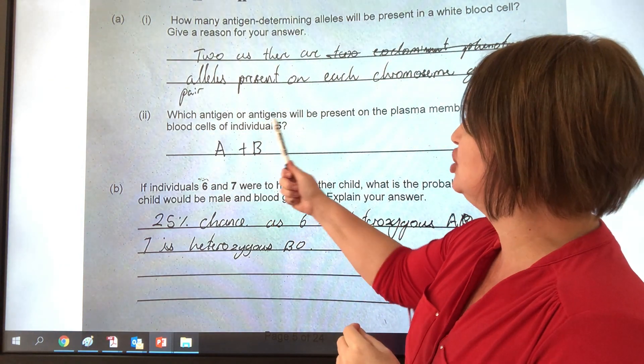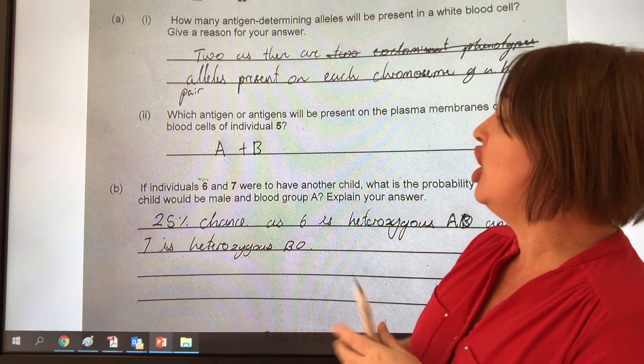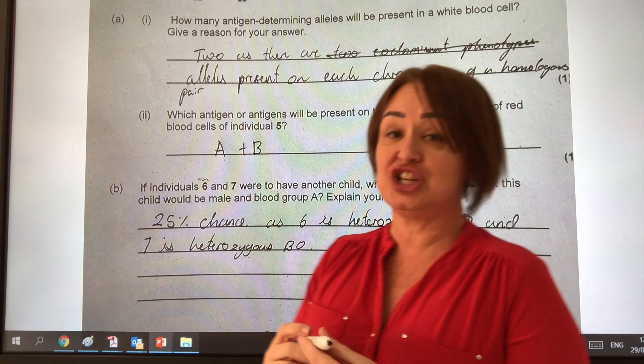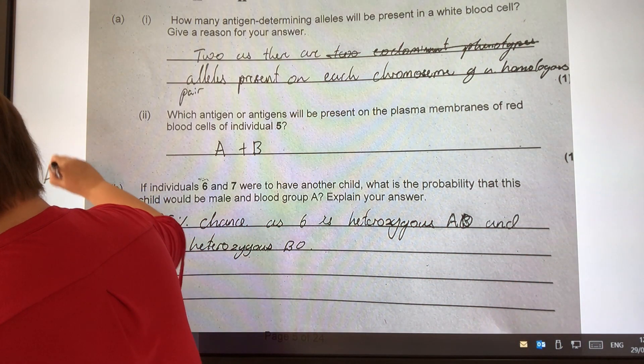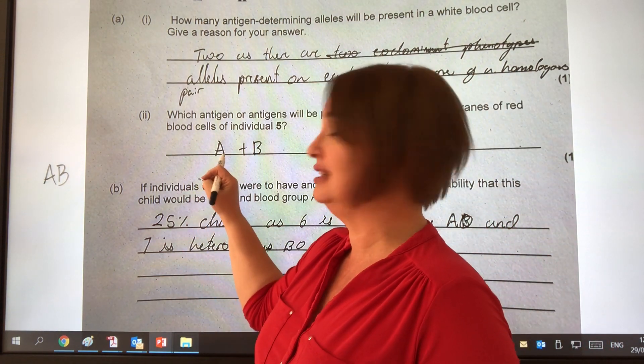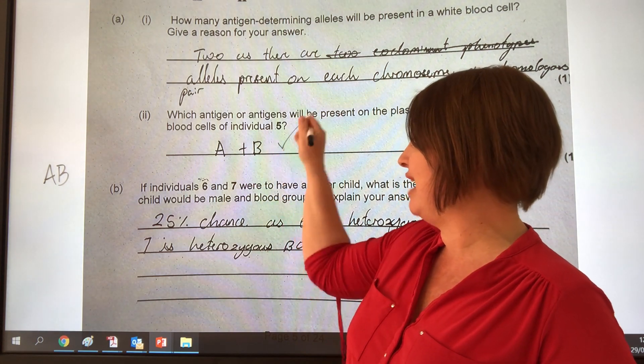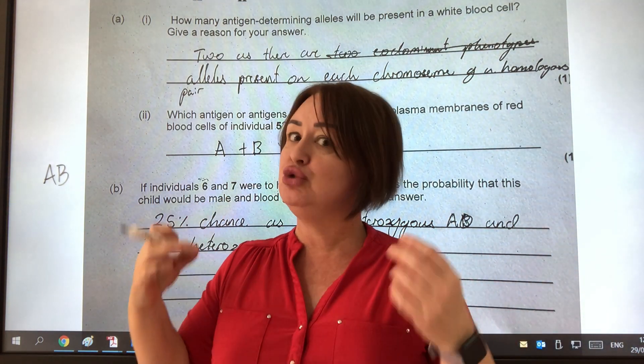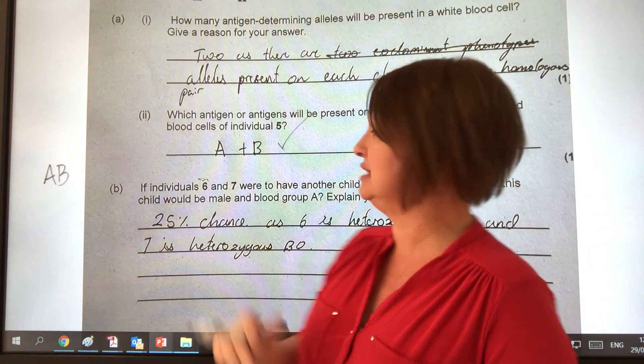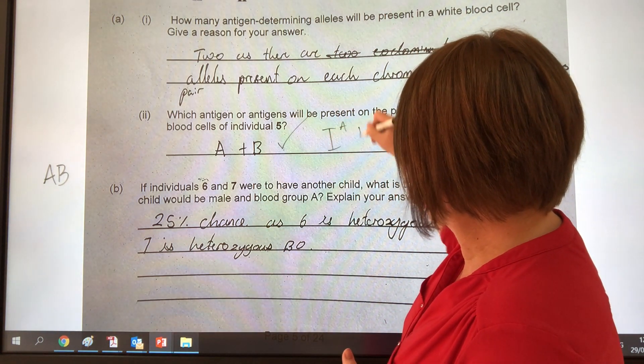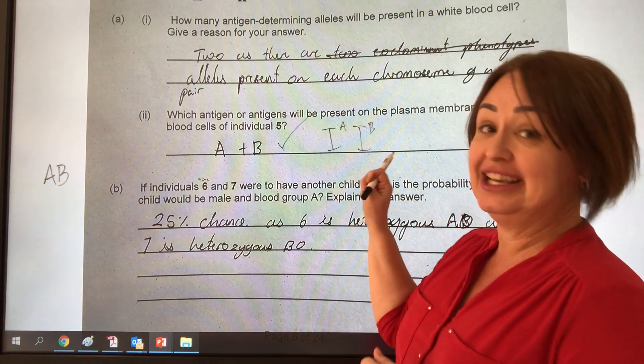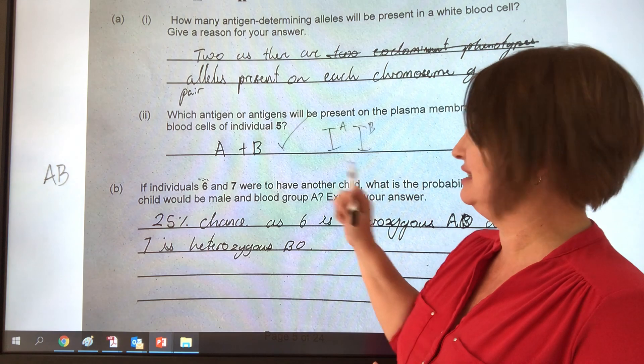Let's look at the next question. Which antigen or antigens will be present on the plasma membranes of red blood cells of individual five? Well, individual five actually has blood group AB. It tells us that in the question. And so basically, the antigens will be A, and the other antigen will be B. That is correct. Now according to the examiner's report, which you really should be reading alongside the mark scheme, it actually said that a lot of students lost that mark because they had written IA IB. Well that is obviously the alleles, and the question asks which are the antigens? So it needs to be that.